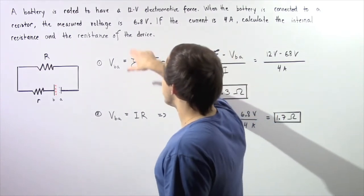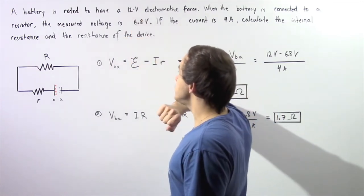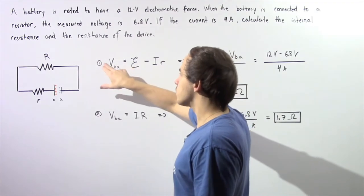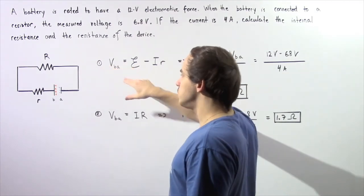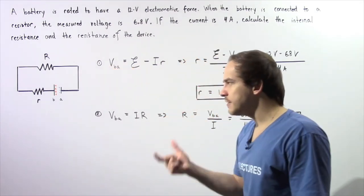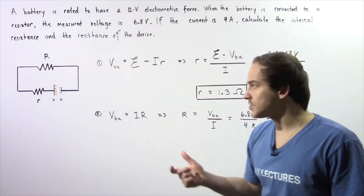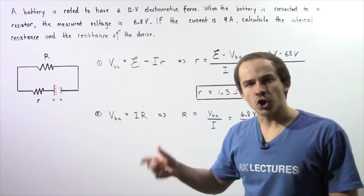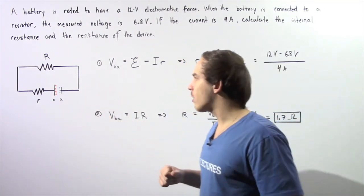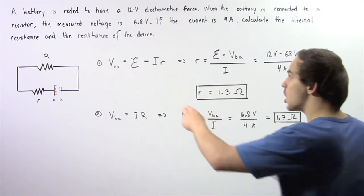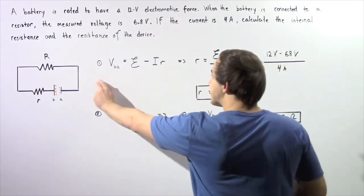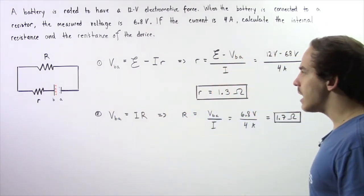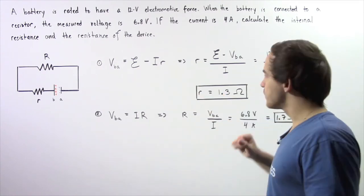We know what the electromotive force is and we know what our terminal voltage is. Remember, the terminal voltage is simply the voltage difference across our battery when electric current is allowed to flow through our circuit. We essentially take this equation, rearrange it, and solve for lowercase r.